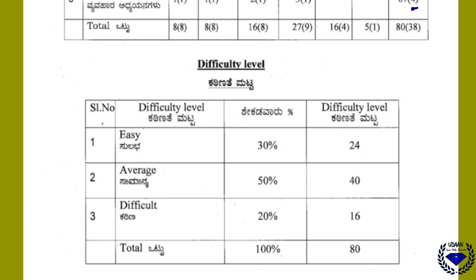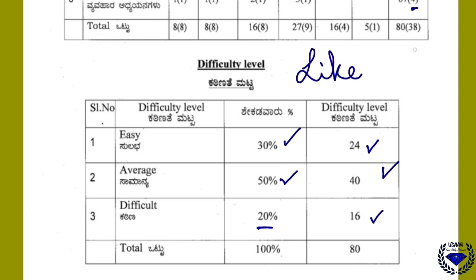You can see that 24 marks will be easy — that is 30 percent. 50 percent will be average difficulty and the remaining 20 percent will be very difficult. I hope you understood this. Kindly like, share with all your friends, and don't forget to subscribe for more. Thank you.